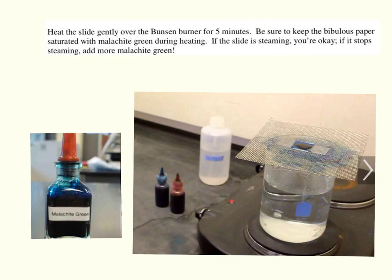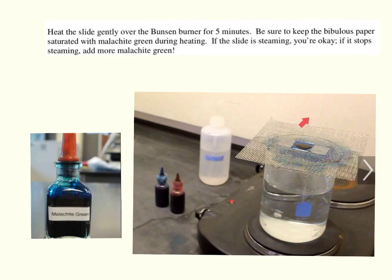After heat fixing the bacteria to the slide, we will have a hot plate boiling some water with a wire gauze set over the beaker. We will place our slide on the wire gauze and then add the Malachite Green to the slide, making sure to really saturate it. It is better to place the slide on the wire gauze first, then add the stain, rather than trying to move the slide with the stain already on it.